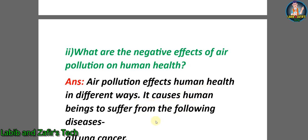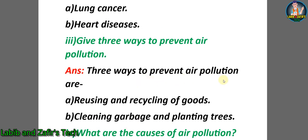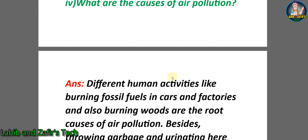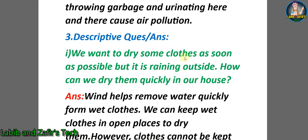Third question: Give three ways to prevent air pollution. Answer: Three ways to prevent air pollution are reusing and recycling of goods, cleaning garbage and planting trees. Fourth question: What are the causes of air pollution? Answer: Different human activities like burning of fossil fuels in cars and factories and burning ores are the root causes of air pollution. Besides, throwing garbage and urinating here and there also cause air pollution. Now let's go through some descriptive question answers.